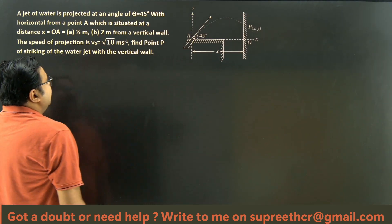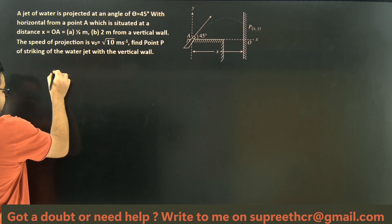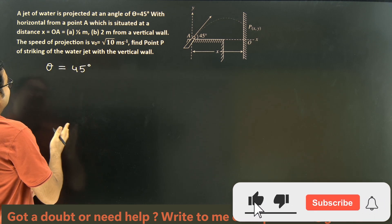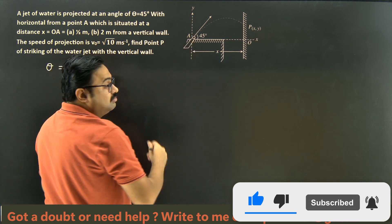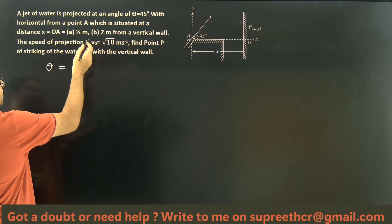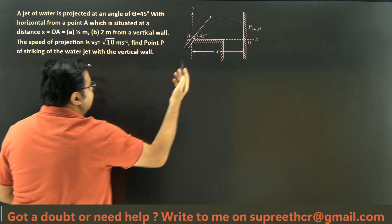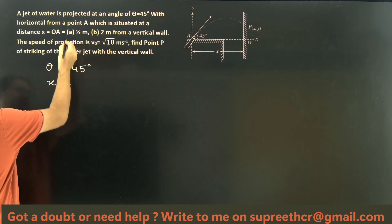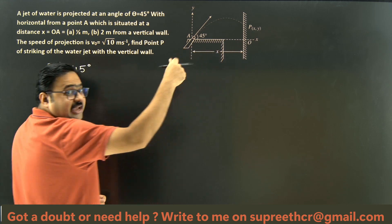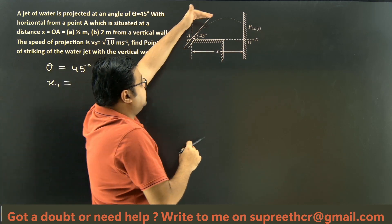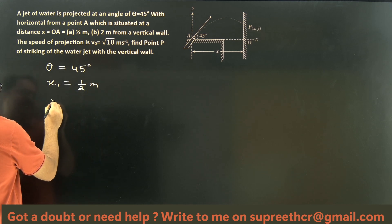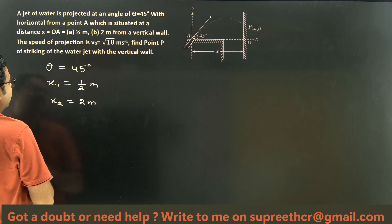A jet of water is projected at an angle of 45 degrees — theta equals 45 with the horizontal — from a point A, which we will assume to be the origin. A is situated at a distance OA equal to half a meter. So X1, the distance to where the water jet strikes, is half a meter to begin with, and in the second case X2 is 2 meters from a vertical wall.